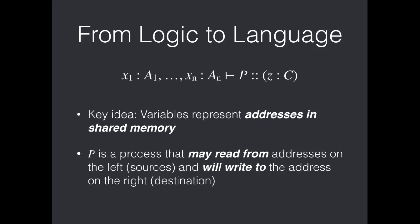The key idea here is that the variables x1 through xn as well as z represent addresses in shared memory. And P, rather than an expression, is a process term. It's permitted to read from addresses on the left, the x1 through xn, which we might call sources. And it is required to write to the address on the right, the z of type c, and we will call that the destination.